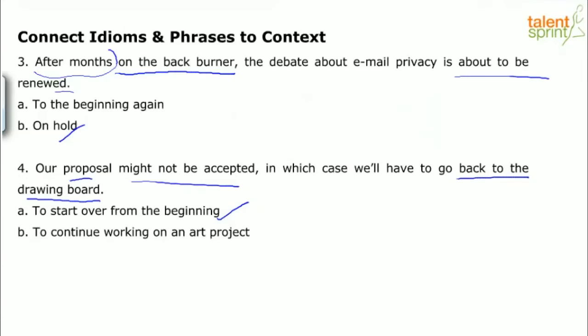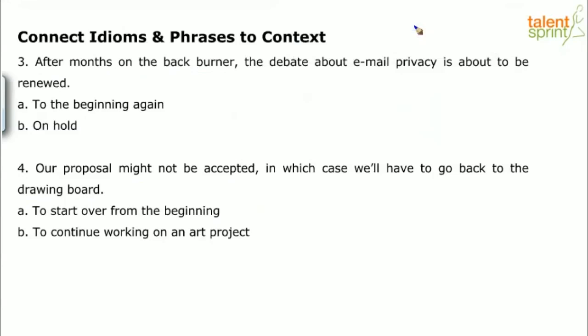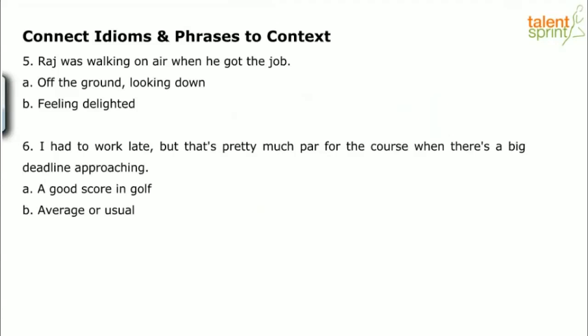Let's do a couple more context examples. 'Raj was walking on air when he got the job.' The idiomatic expression is 'walking on air.' The options are: A — be off the ground, looking down; or B — feeling delighted.